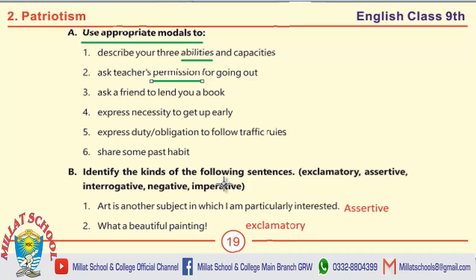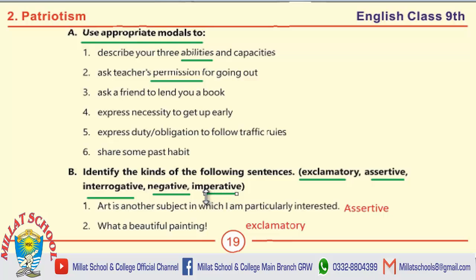Next, Part B: Identify the kinds of the following sentences. The types are: exclamatory, assertive, interrogative, negative, and imperative. Exclamatory sentences are used for expressing surprise. Assertive means a simple sentence. Interrogative sentences contain a direct question and end with a question mark. Negative sentences use 'not' right after the helping verb. Imperative sentences contain an order or command.